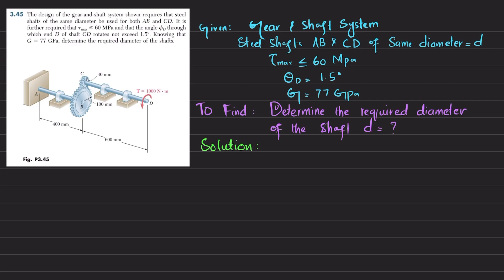First, the torque in shaft C-D is given: T_CD equals T_D, which is 1000 N·m. At the point of contact between the two gears there is a force, and since torque equals force times radius, the contact force F equals T_CD divided by r_CD.